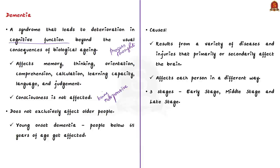While people do tend to lose memory somewhat as they age, in dementia these effects are exacerbated. Also remember, dementia does not exclusively affect old people — there is also young onset dementia, where people below 65 years of age get affected with this illness.